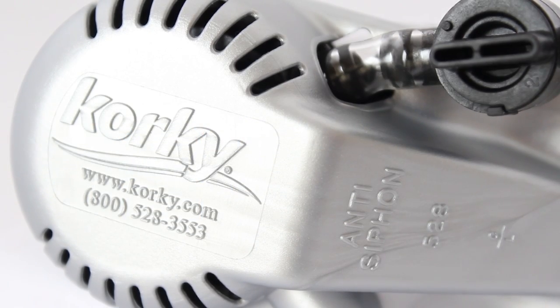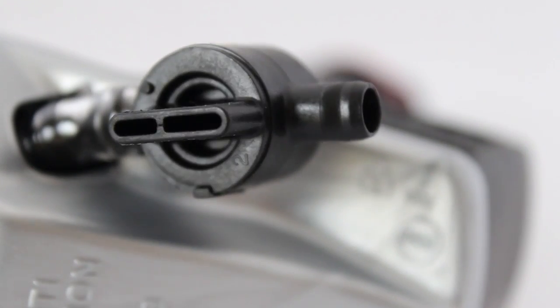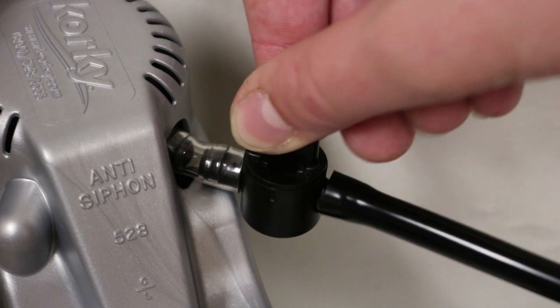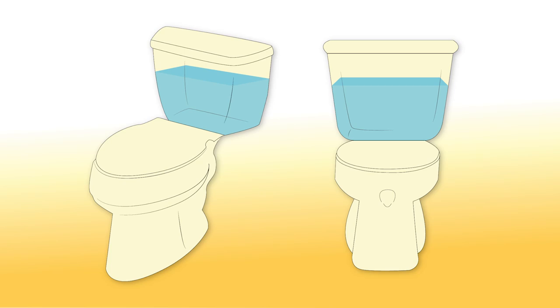Newer fill valves like the Corky Platinum Fill Valve feature a refill adjuster that matches the original water ratio of your toilet. Adjustment ranges from 0% to 40% of the water sent to the bowl.